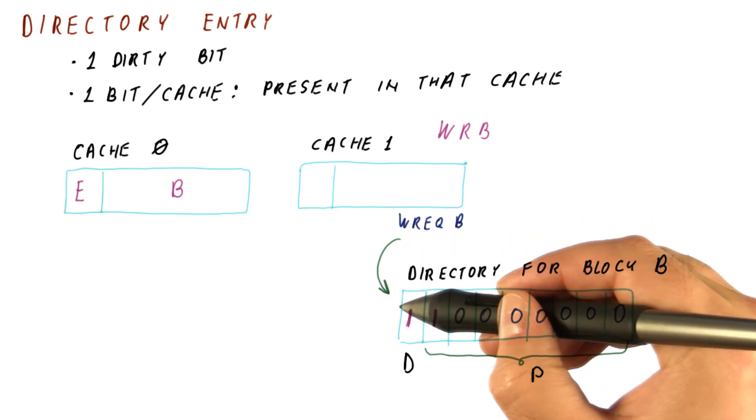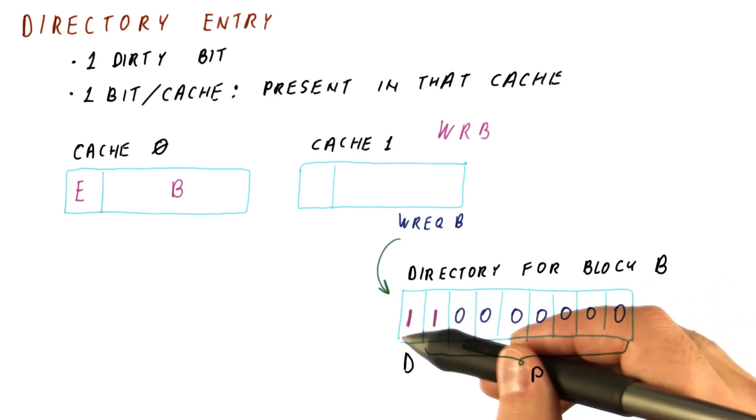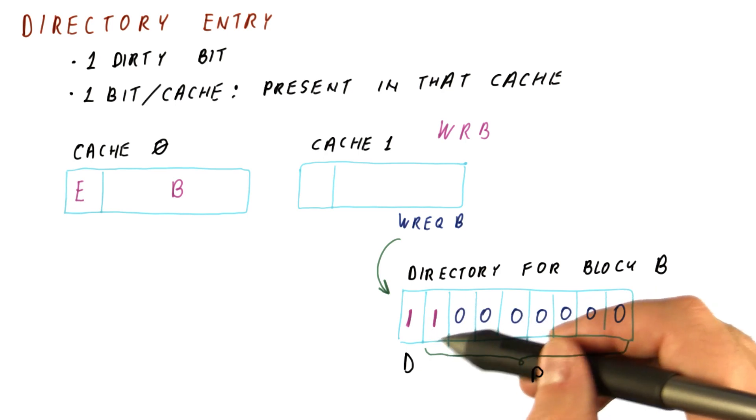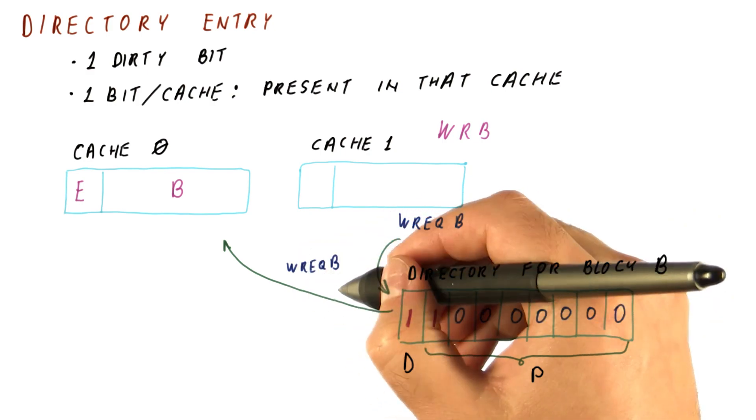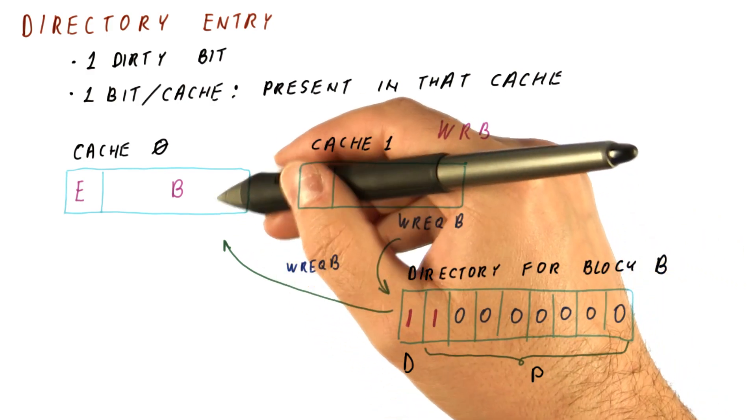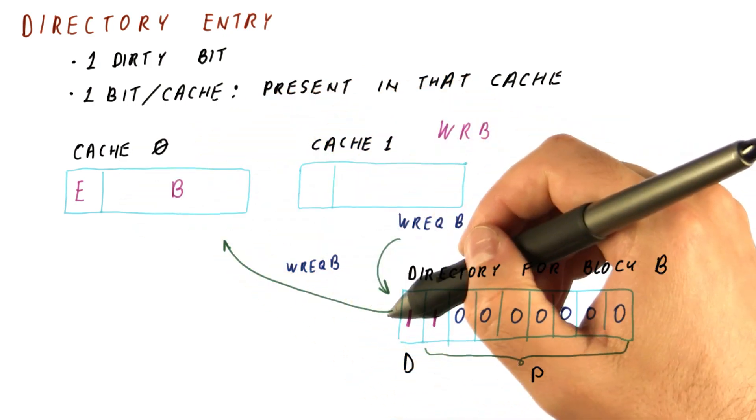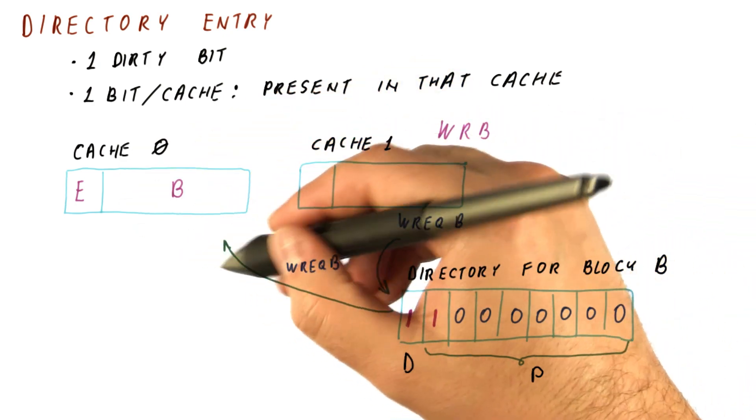With the directory, we sent the request to the directory controller. It sees that the block is present and possibly dirty in, in this case, cache zero. So what now happens is the directory forwards the write request for B to the caches that are present. In this case, it forwards it to cache zero. Cache zero now sees this request just as if it was snooped from the bus.